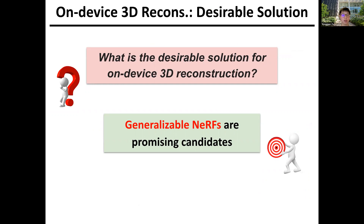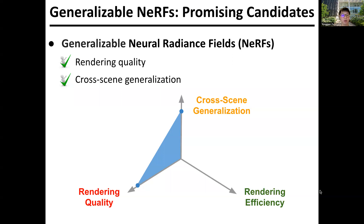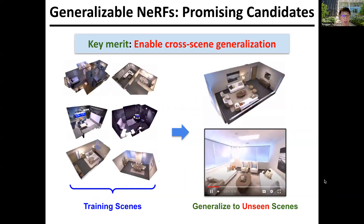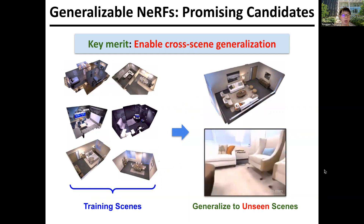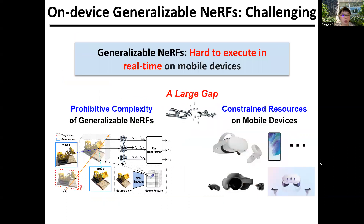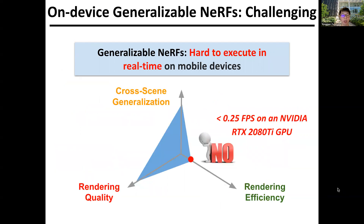In this work, we adopt generalizable neural radiance fields as promising candidates. This is because they can achieve decent rendering quality and, more importantly, the capability to achieve cross-scene generalization. In particular, generalizable NeRFs can be trained on a set of training scenes and then generalized to new scenes instantly with decent rendering quality. However, generalizable NeRFs feature prohibitive complexity, making them hard to execute in real-time on resource-constrained mobile devices. For example, a typical generalizable NeRF pipeline can only achieve no more than 0.25 FPS on an NVIDIA RTX 2080 Ti GPU.